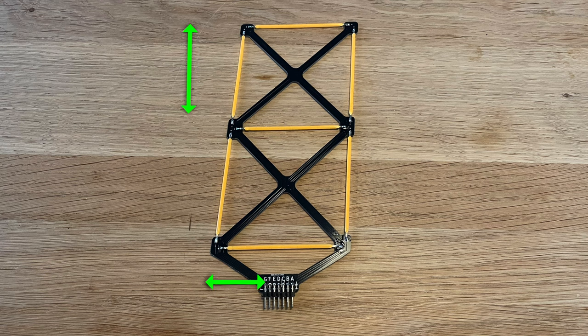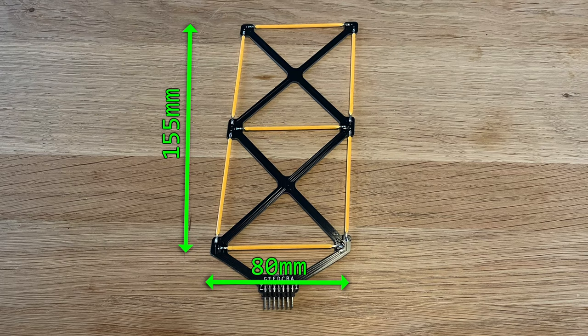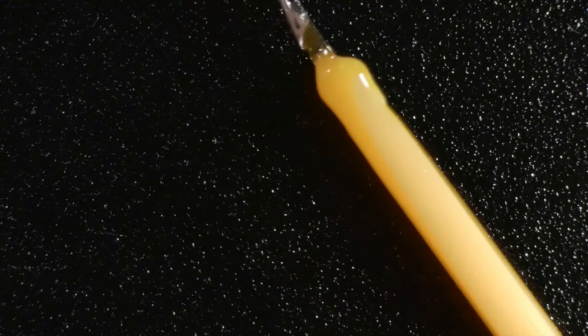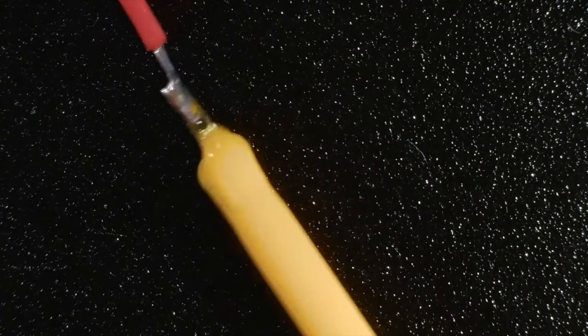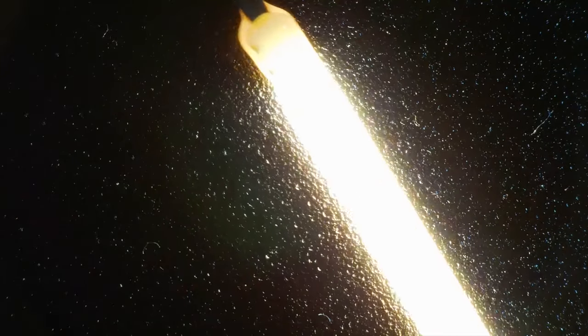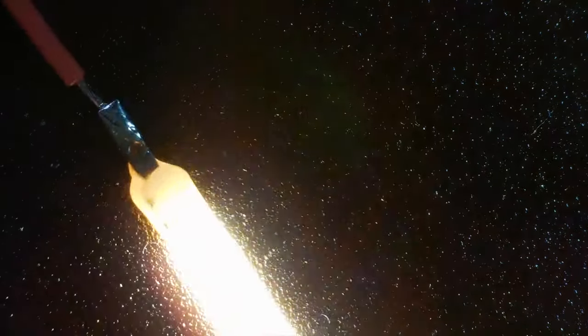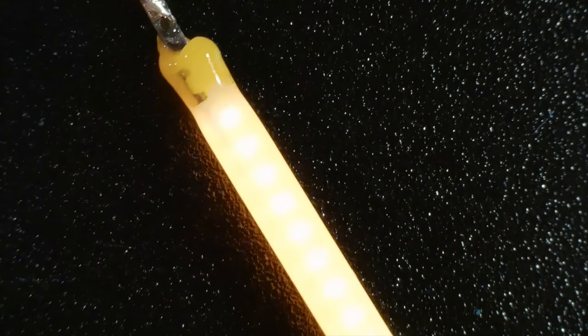I knew the large digits would be quite big, but I wasn't quite prepared for how large they actually are. Soldering them up is pretty easy. Now there is a front and back to these LED filaments. It doesn't really make much difference when running them at full brightness, you only really see a difference when running at low current. But for a completely consistent display I've tried to get them all the same way round.